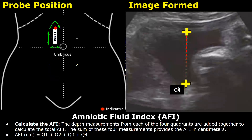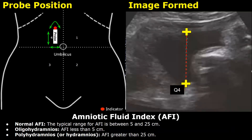Finally, take the measurement in the fourth quadrant, which is the right upper quadrant. After you have four measurements from all four quadrants, you can add them together to get the amniotic fluid index.